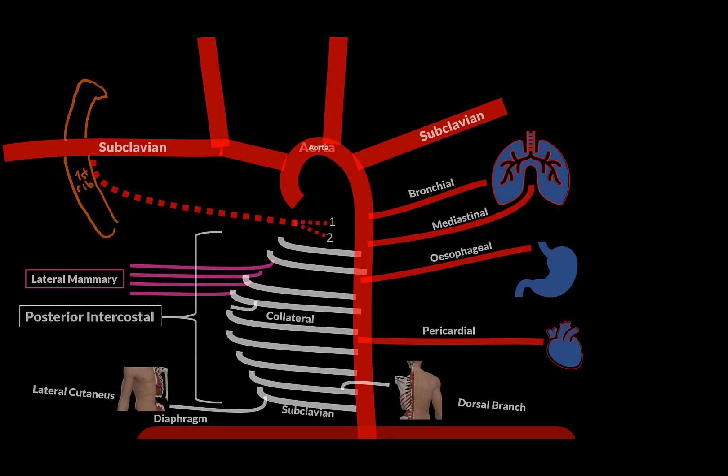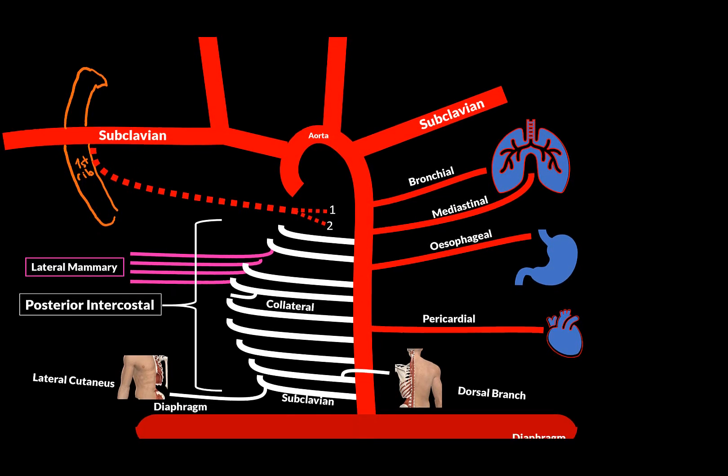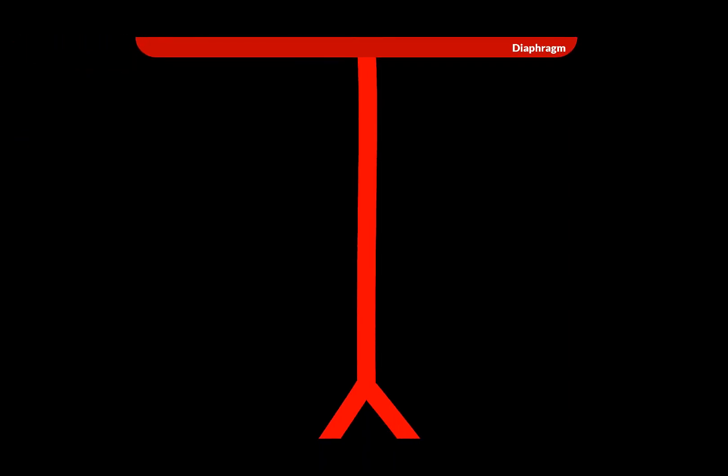This video will be about the abdominal aorta. In the last video, we looked at the side branches of the thoracic aorta. So now let's move under the diaphragm to look at the abdominal aorta.